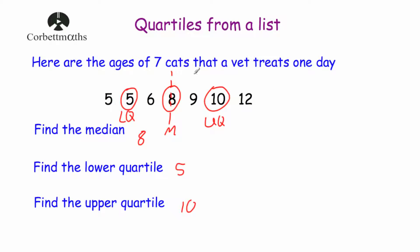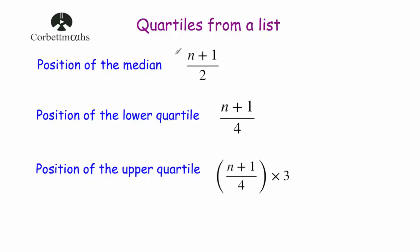That's quite nice whenever there's a small amount of data. But what if there's a large amount of data and we want to find the position of the lower quartile, median or upper quartile quickly? At GCSE level, one of the exam boards has specified a formula for this. If you wanted to find the position of the median, you take the number of numbers, add one and divide by two, and that will tell you the position of the median.